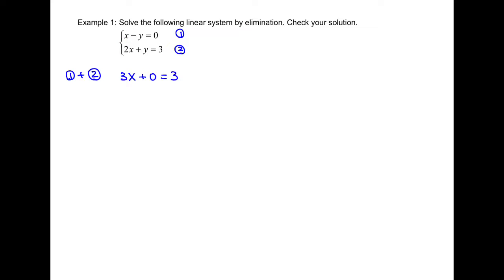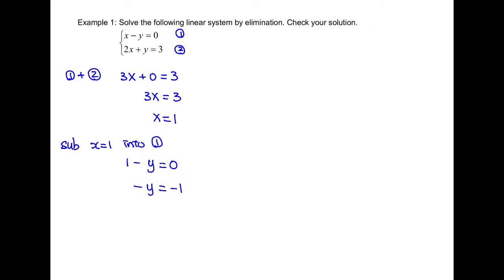We will have x plus 2x, which is 3x, and negative y plus y will be 0, and 0 plus 3 will be 3. Then we find 3x equals 3, so x equals 1. Once we have x equals 1, we can substitute back into equation 1 and we will get 1 minus y equals 0. Subtract 1 on both sides and we will get y equals 1.